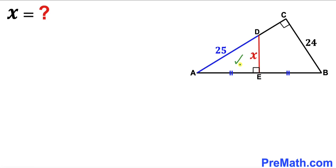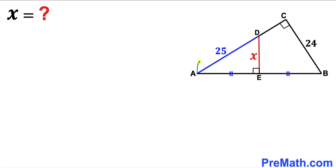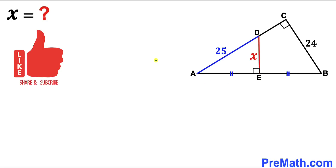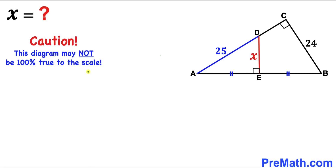Welcome to pre-math. In this video we have a right triangle AAD inside another right triangle ABC. Side length BC is 24 units, segment AD is 25, and the vertical segment DE is represented by X. Furthermore, segment AE is equal to segment BE. Our task is to find the value of X. Please keep in mind that this figure may not be 100% true to scale.